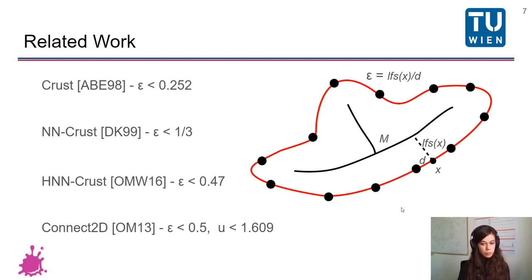We have managed to improve on this, keeping epsilon 0.5, but increasing the non-uniformity ratio. So we are able to reconstruct more curves.